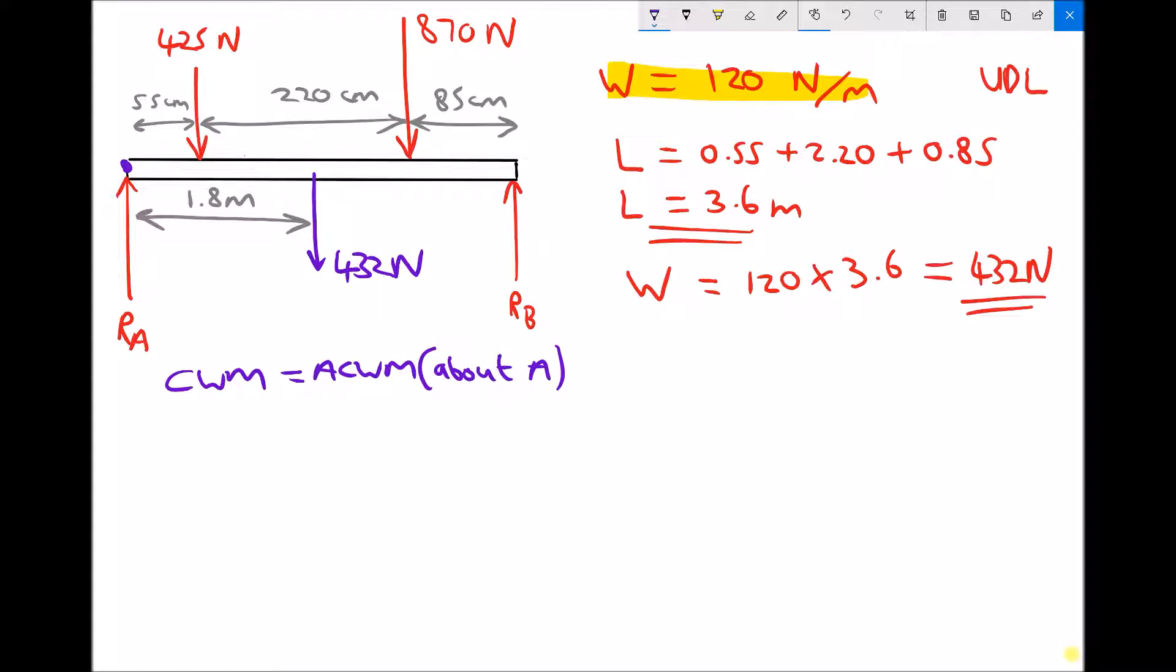So if we take each force in turn, we'll begin with the 425 newton force. We can see that that force is trying to turn the beam in a clockwise direction. And if we take the next force along the beam, which is actually the weight, again we can see that the weight is trying to turn the beam in a clockwise direction. We can also see that the 870 newton force is trying to turn the beam clockwise. And the only force that's trying to turn it anti-clockwise about our pivot is the force at the right-hand support, RB.